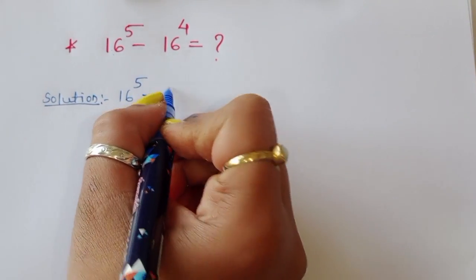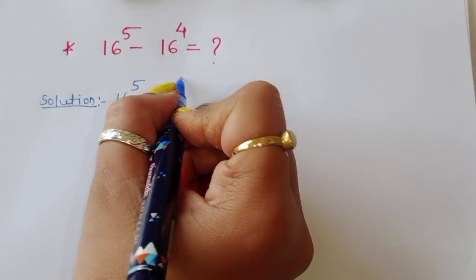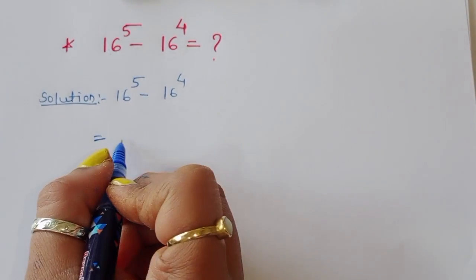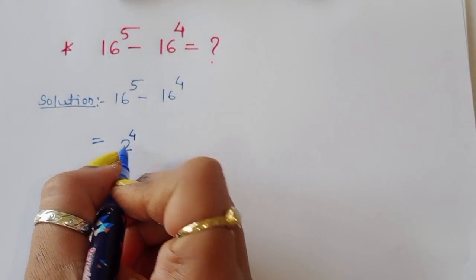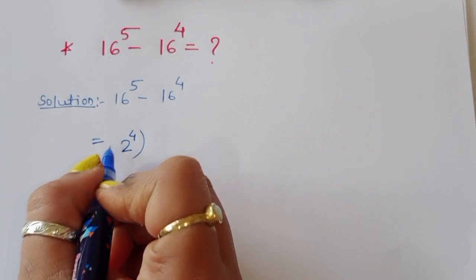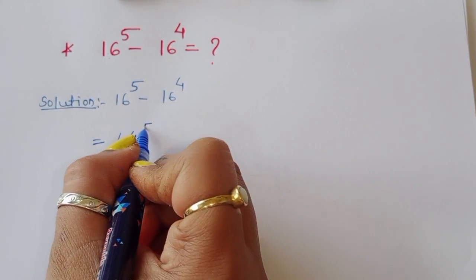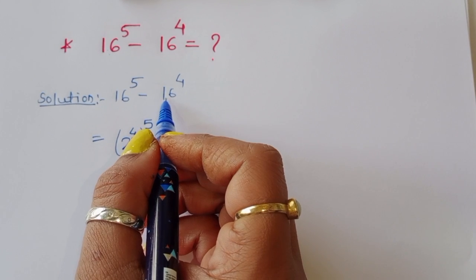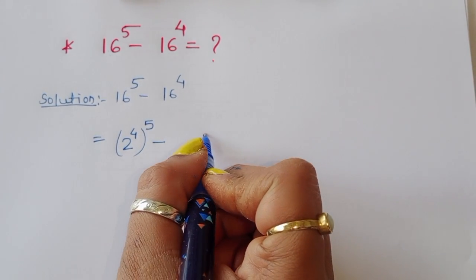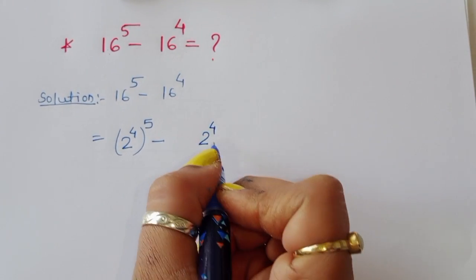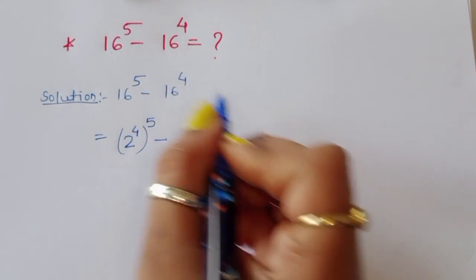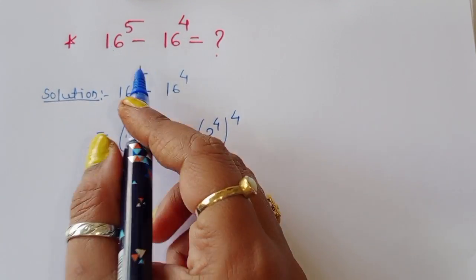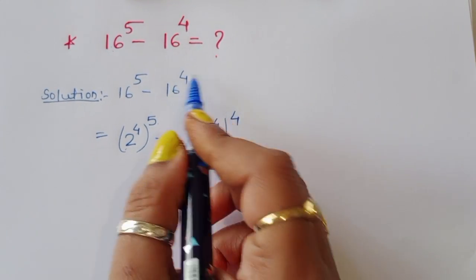16 power 5 minus 16 power 4. We can write 16 as 2 power 4. So this becomes 2 power 4, all raised to power 5, minus 2 power 4, all raised to power 4.